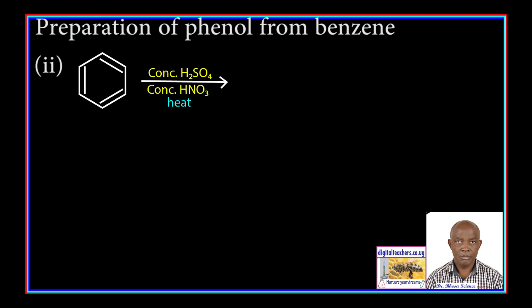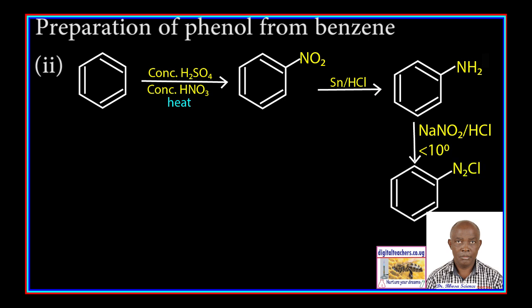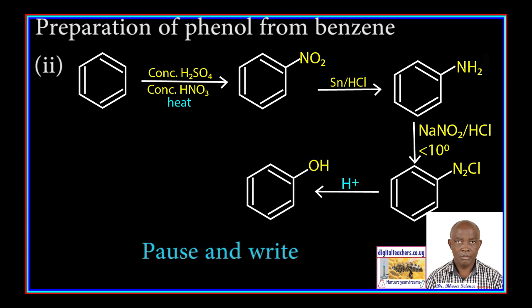Method 2: Benzene is reacted with concentrated nitric acid and hot concentrated sulfuric acid to form nitrobenzene. Nitrobenzene is reduced by tin in the presence of hydrogen to form aminobenzene. Aminobenzene reacts with cold sodium nitrite in the presence of hydrochloric acid to form benzene diazonium chloride. Benzene diazonium chloride is hydrolyzed by an acid to form phenol.